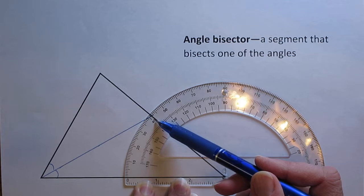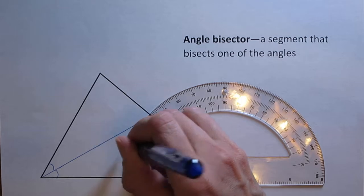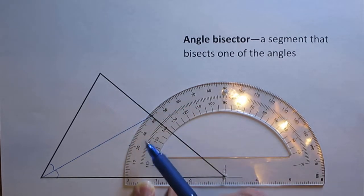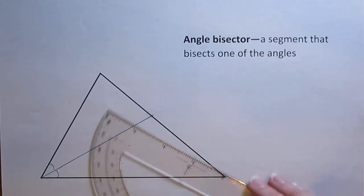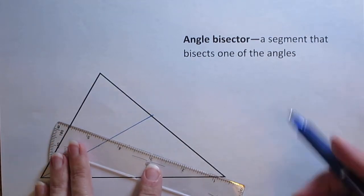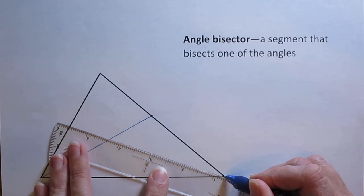This angle looks like it's about maybe 42 degrees. So if I cut that in half, it's going to be about 21 degrees. I'm going to make a little mark right about at 21 degrees. Then I'm going to connect the vertex of my triangle, the vertex of my angle, with that point that I just made, 21 degrees.